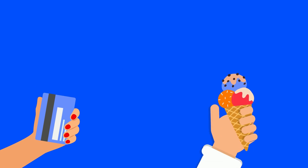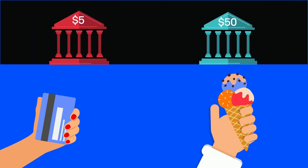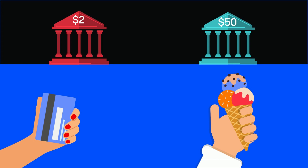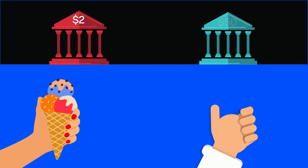Now let's look at this same transaction with a digital version of traditional money. This time you purchase the ice cream cone by swiping your credit card. During this transaction, three digital dollars move from your bank account to the ice cream man's bank account — ending up with the same result: two dollars left in your bank account and ice cream in hand, and fifty-three dollars in the ice cream man's account. No physical money changed hands, but both bank accounts ended up reflecting the new balances.